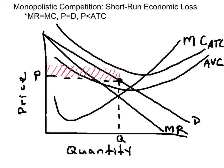To determine price and output for a monopolistically competitive firm, we use the classic MR equals MC rule. MR equals MC gives us output, and then we travel up to the demand curve to get price.